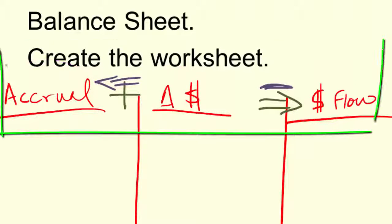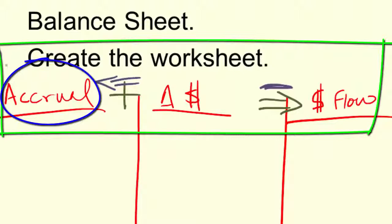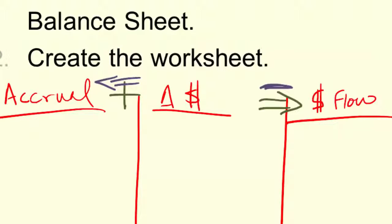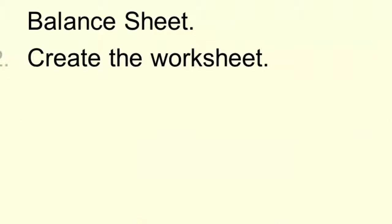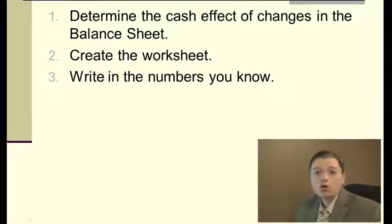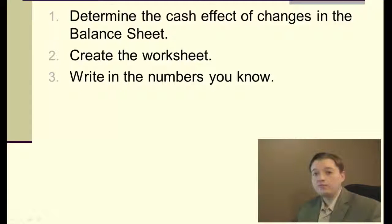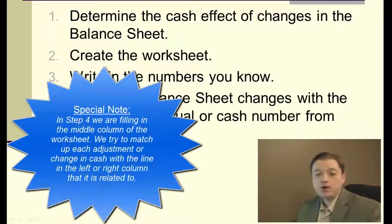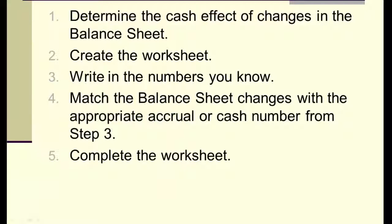The nice thing about the worksheet, if you leave it like this, it's easy to tell: if I have the left-hand side and the middle, then I add; if I have the right-hand side and the middle, then I subtract. Once I've got my worksheet set up, my next step is to put in the numbers that I know — either accrual numbers in the left-hand column, or cash flow numbers in the right-hand column. Then I'll go back to step one and grab those numbers from the balance sheet and match them up with the line items that make sense. Finally, step five, I complete the worksheet by adding the change to the accruals or subtracting the change from the cash flows to get to the column I'm really interested in.